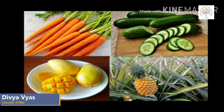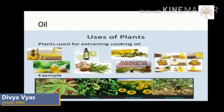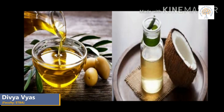The vegetables that we eat with rice and chapati come from plants. Some vegetables such as carrot and cucumber are eaten raw. Delicious fruits such as mango and pineapple also come from plants. Seeds of trees and plants are the main source of the oil we use for cooking.